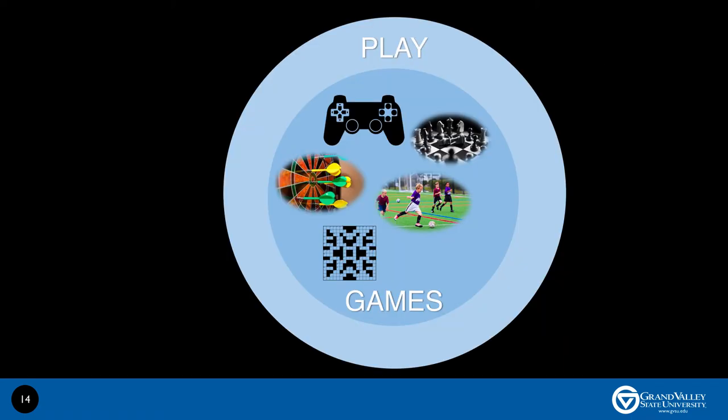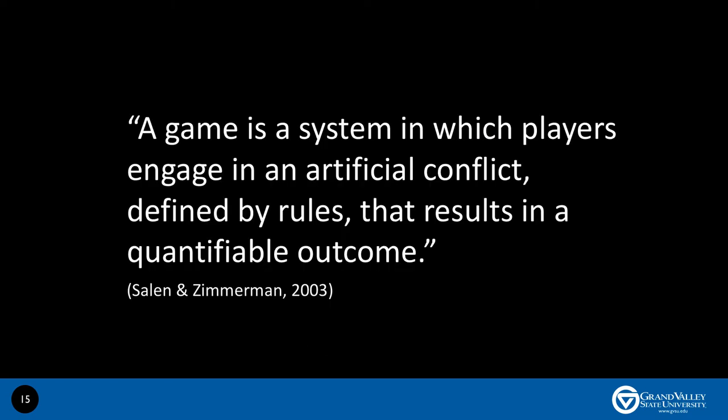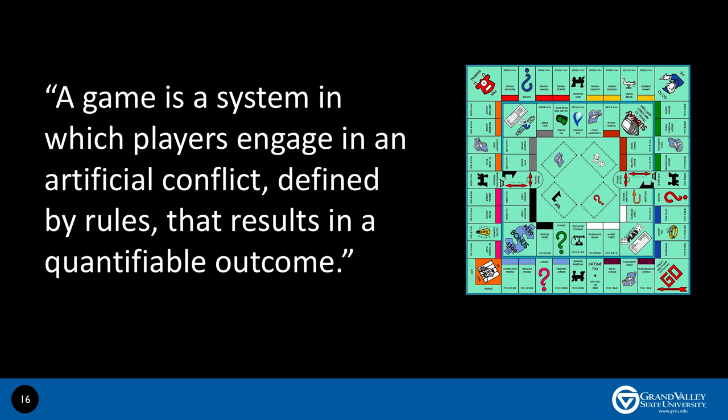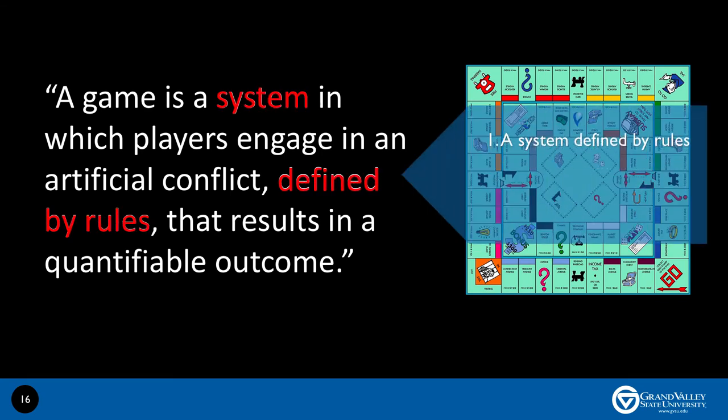Now let's talk about games. As I said earlier, games are a subset of play. According to Salen and Zimmerman, a game is a system in which players engage in an artificial conflict defined by rules that results in a quantifiable outcome. Let's take apart this definition by using Monopoly as an example. There are three major elements to every game. Number one, a game is a system that is defined by rules.